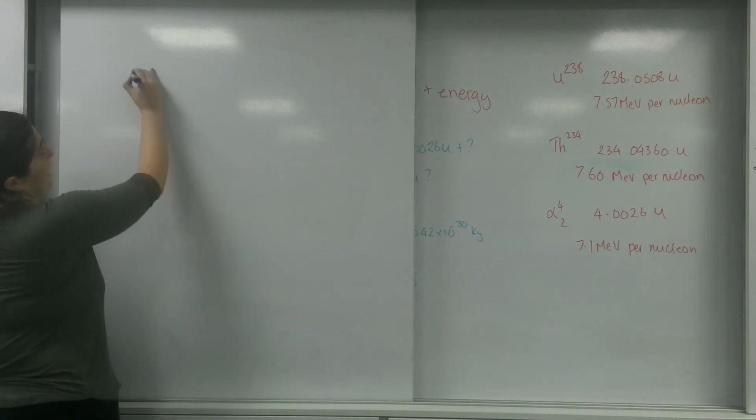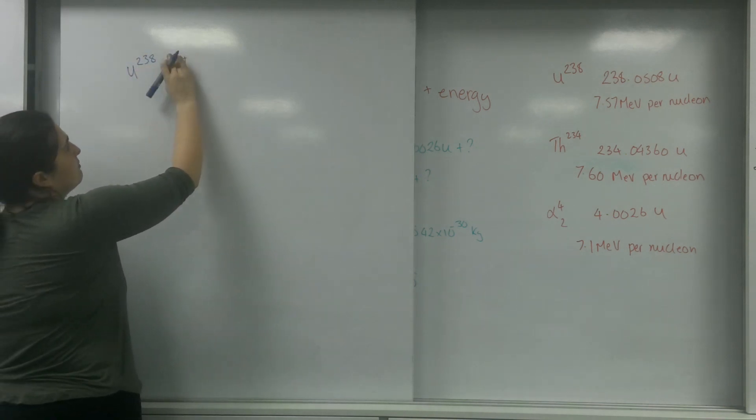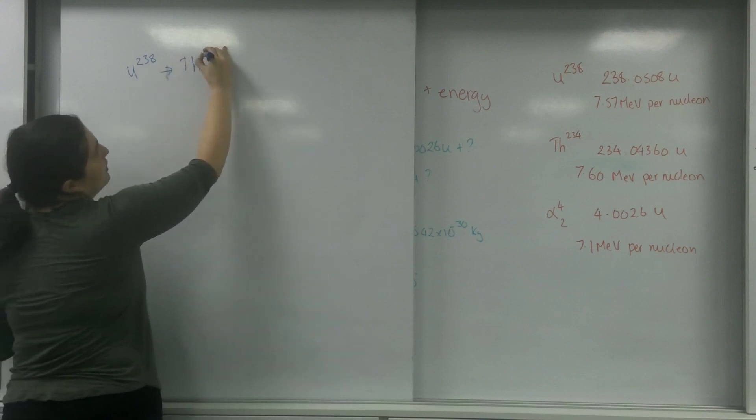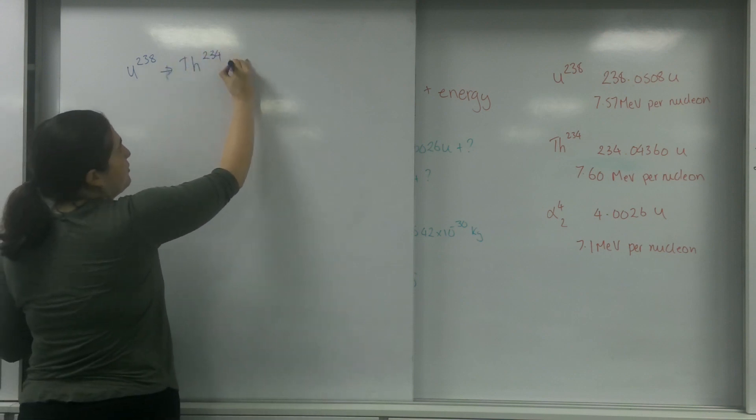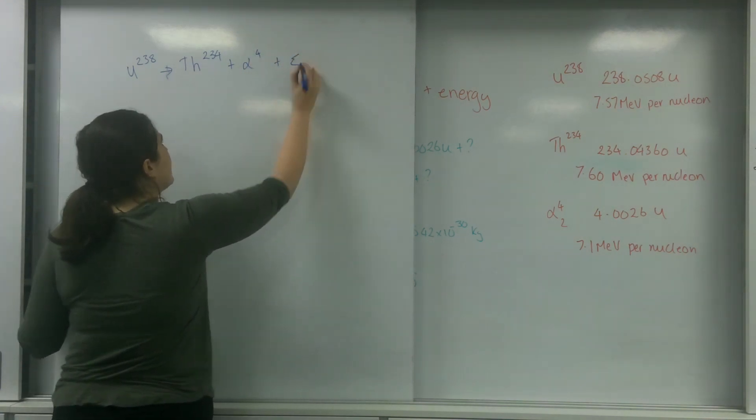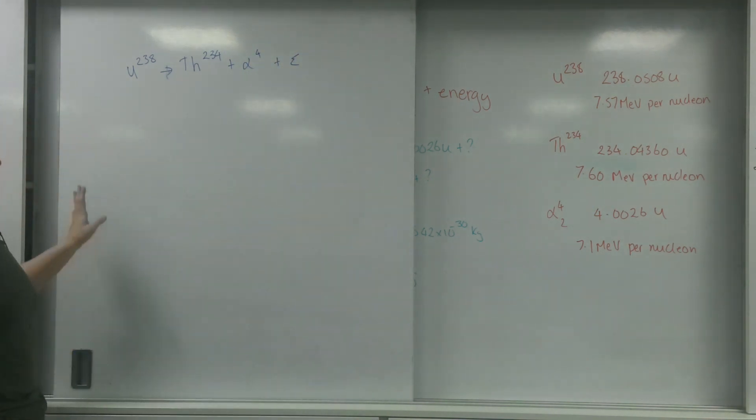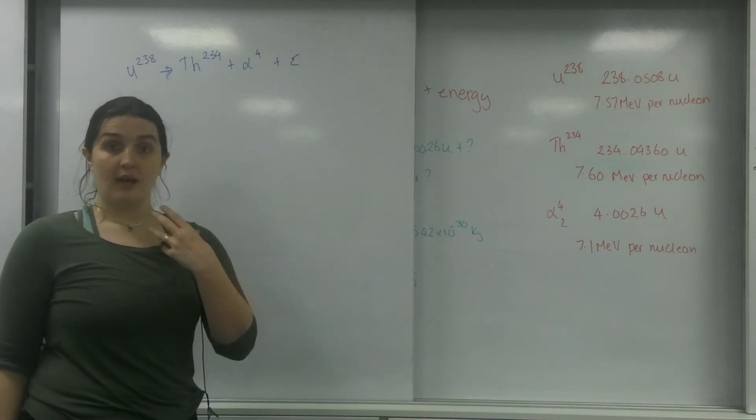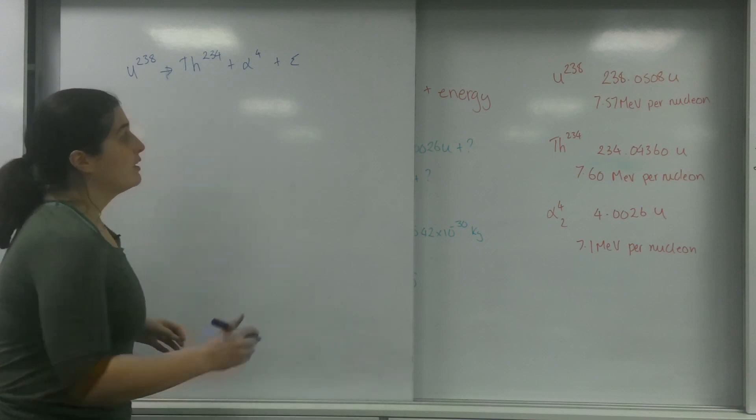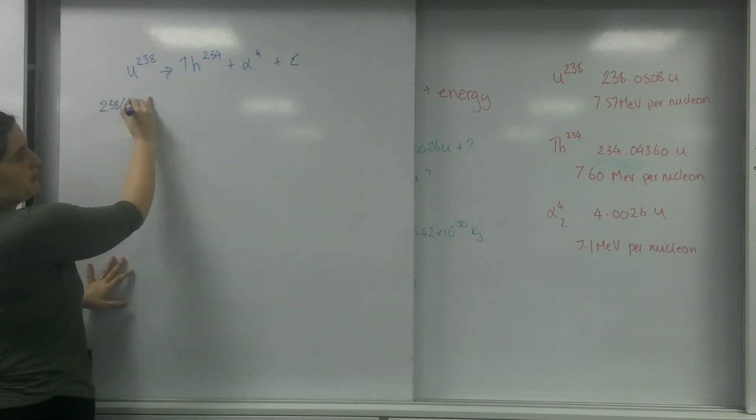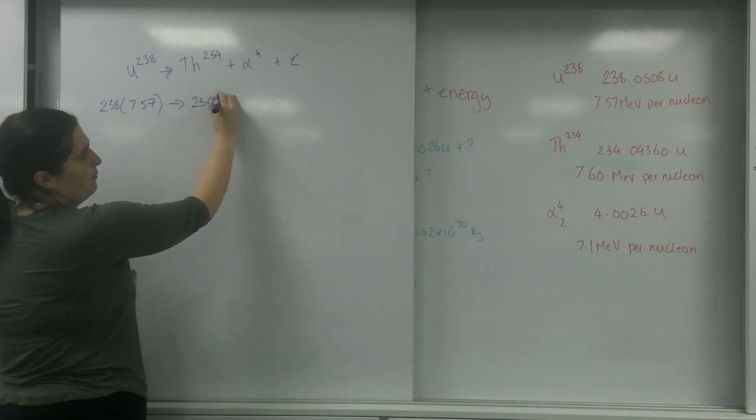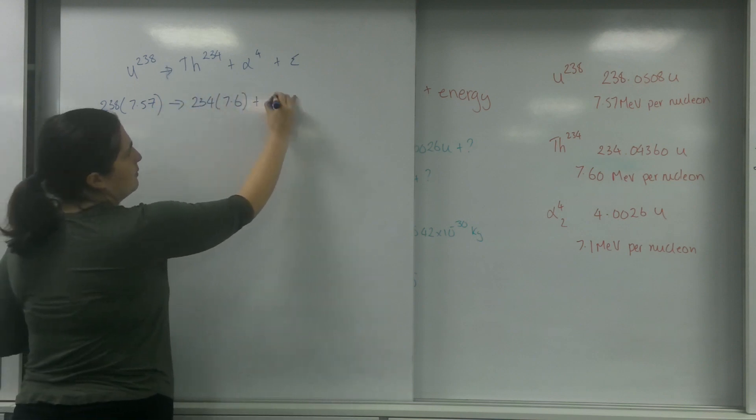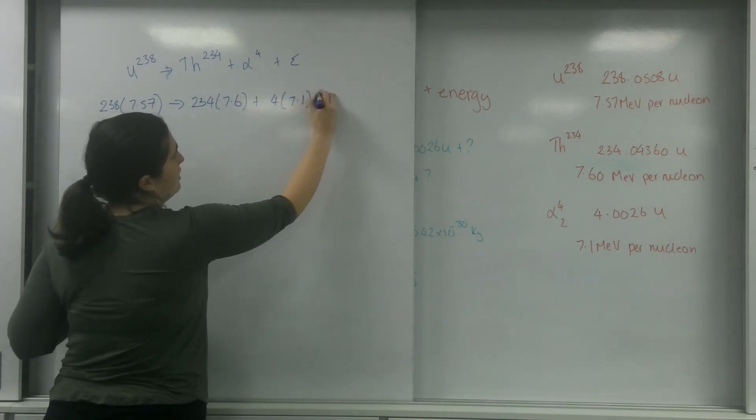I'm going to write the equation again. I've got uranium-238 decays into thorium-234 plus an alpha particle plus my energy. I've been given information per nucleon, so I have to convert this into the total. This one's going to be 238 times 7.57 goes to 234 times 7.6 plus 4 times 7.1 plus my energy.